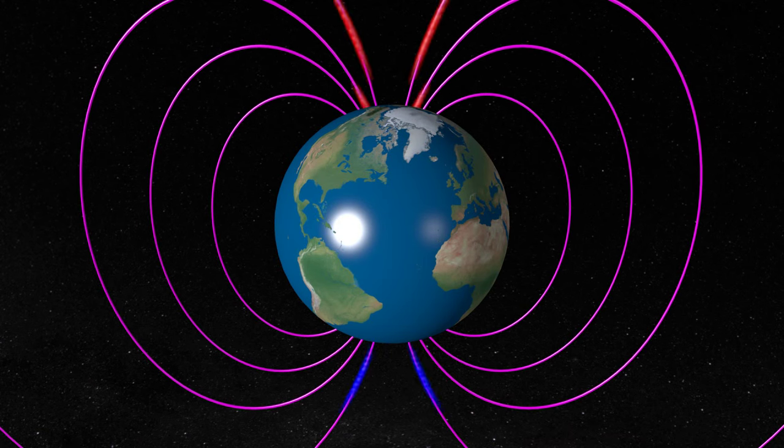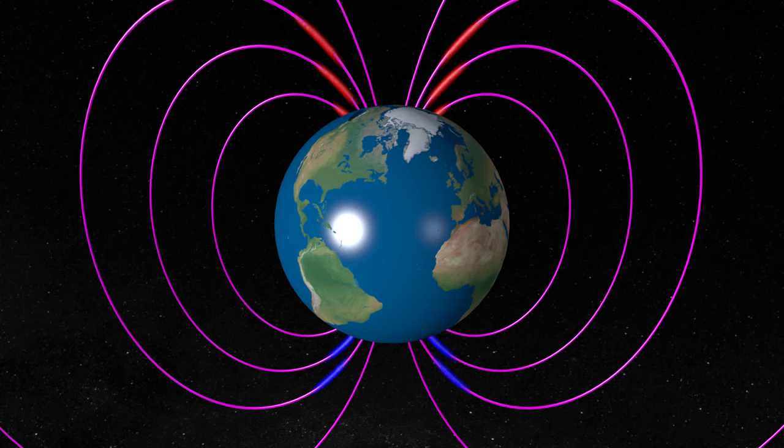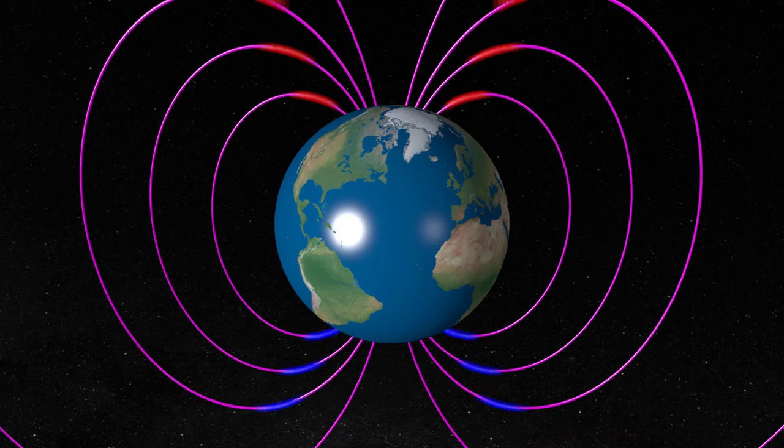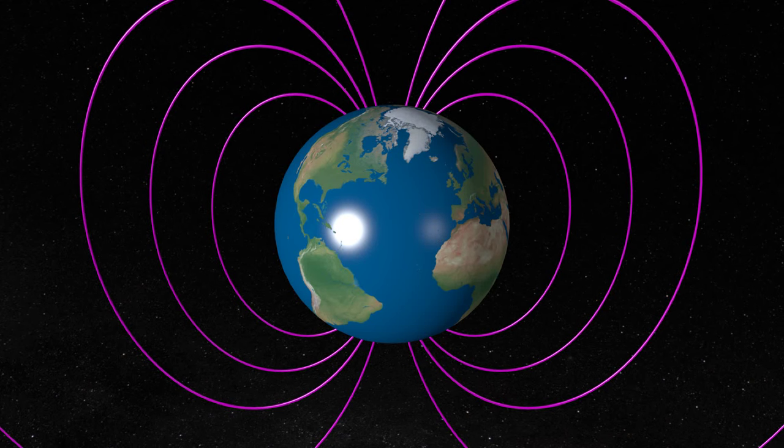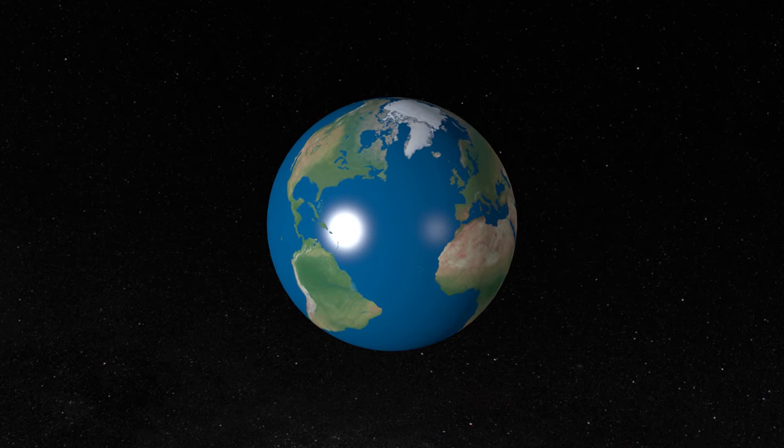Our planet's magnetic field creates a protective barrier against the sun's harmful radiation. Without it, life couldn't exist. But how did our magnetic field begin?